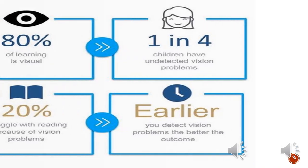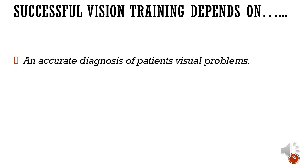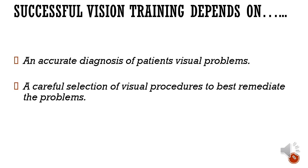Successful vision training depends on an accurate diagnosis. If you don't know the problem, you cannot treat it properly. For example, if a patient has accommodative insufficiency plus convergence insufficiency, and you only diagnose accommodative insufficiency and only give accommodative exercises, the patient still has problems because you never addressed the convergence. A complete battery of tests should be run. It is also important to not rely on NPA alone - many supporting tests are needed.